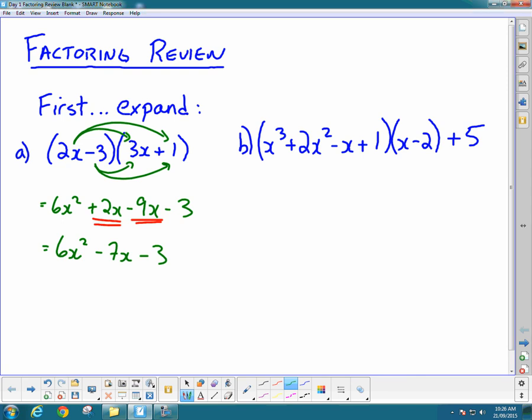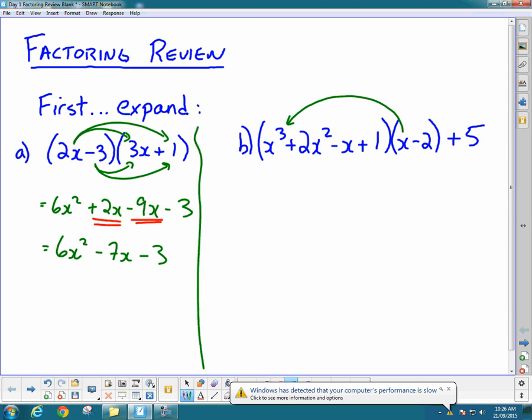For trinomials or larger polynomials, it still works the same way - everything on the outside gets multiplied by each term on the inside. I'm going to multiply the second one by x first, then by -2. Multiplying x through: x times x³ gives x⁴, plus 2x³, minus x², plus x.